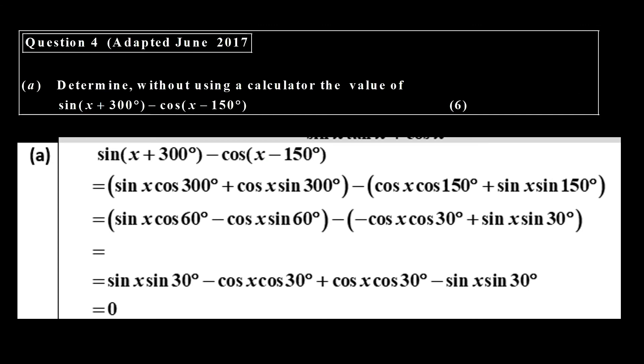In question number four, which is adapted from June 2017, we've got the same idea. So you have to expand the sine x plus 300, and there's the expansion. You have to expand the x minus 150, and there's the expansion. Then the 300 you can reduce. Cos of 300 becomes cos of 60. Sine of 300 becomes negative sine of 60. Cos of 150 becomes negative cos of 30. Sin of 150 becomes positive sin of 30.